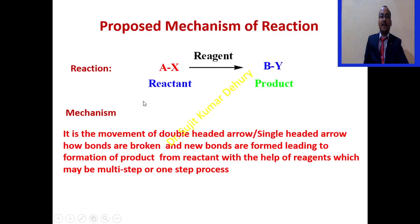Then we should know what is a mechanism. Mechanism is the movement of a double-headed arrow or single-headed arrow, showing how bonds are broken and new bonds are formed, leading to formation of product from reactant with the help of reagents, which may be multi-step or one-step process.